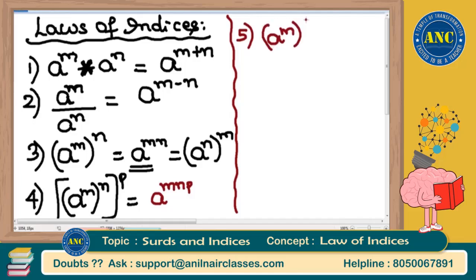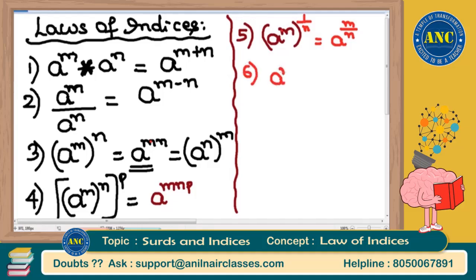Suppose a^m has a power that is a fraction — specifically 1/n. This follows the same rule: (a^m)^(1/n) = a^(m × 1/n) = a^(m/n). It makes no difference whether the outer power is a fraction or a whole number — the rule of multiplying powers still applies.